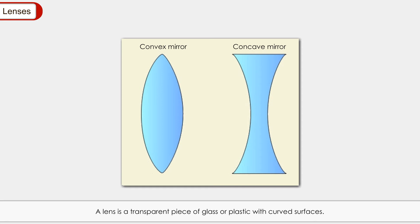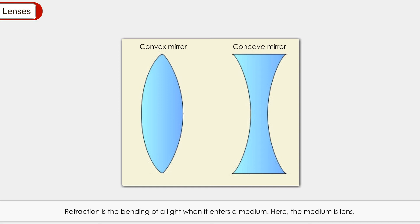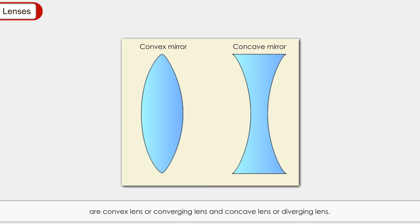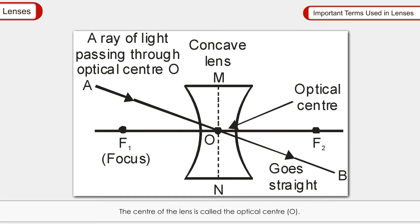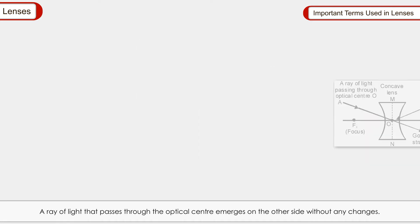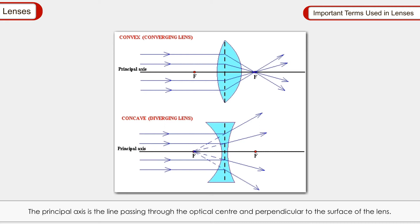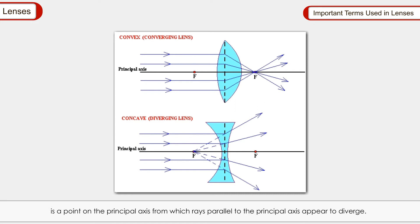Lenses: A lens is a transparent piece of glass or plastic with curved surfaces. It refracts light instead of reflecting it. Refraction is the bending of light when it enters a medium — here, the medium is the lens. Lenses are of various types, but the two most important are the convex lens (converging lens) and the concave lens (diverging lens). The centre of the lens is called the optical centre O. The principal axis is the line passing through the optical centre perpendicular to the lens surface. The focal length f is the distance between the optical centre and the principal focus.